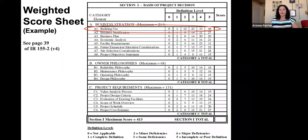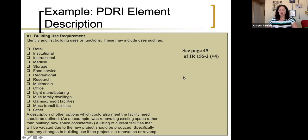So this is what an element description would look like. And as I mentioned, we're going to go first through building use requirement. This is element A1 in section, I'm sorry, we're in category A, section one. So this defines the building uses or functions. They include uses such as, I'm not going to read you the entire list.